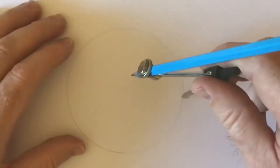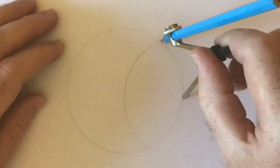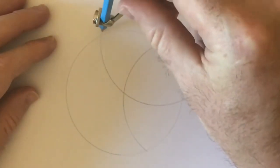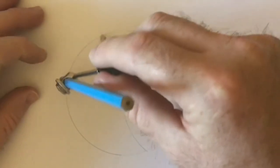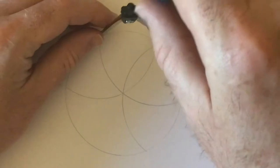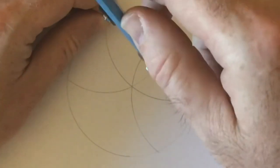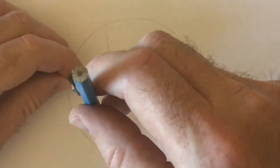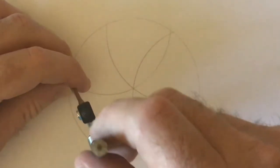The important thing is to keep your compass set at that radius all the way through this. So you can see what we're doing here is drawing arcs, and each time the arc is passing through the center of the original circle. So if you're passing through the little pin dot on the circle, you know you are accurate.